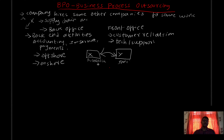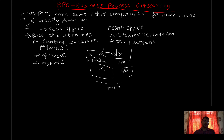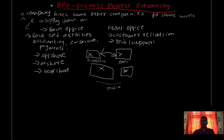The second type is onshore outsourcing. In onshore outsourcing, the work is outsourced within the same country. The third type is nearshore outsourcing. Nearshore means outsourcing to nearby countries — for example, from India to Pakistan or Sri Lanka. These are the three types of outsourcing: offshore, onshore, and nearshore.